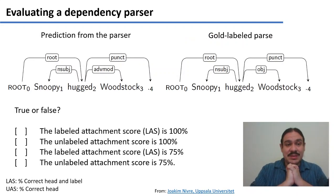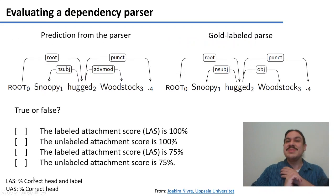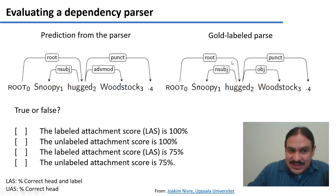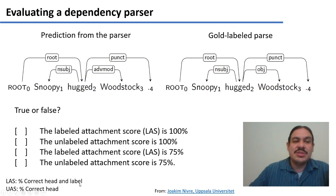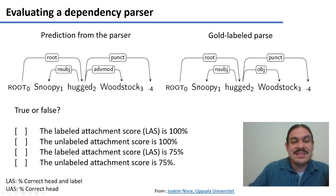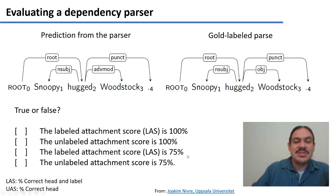Here's an example. Given the definitions of labeled and unlabeled attachment score, which of these statements are true or false? This is the prediction the parser gave you, and this is the parse you were supposed to get. The labeled attachment score requires the correct head and label for the arc; the unlabeled attachment score just requires the correct head pointing towards you. Pause the video and decide whether these statements are true or false before continuing.